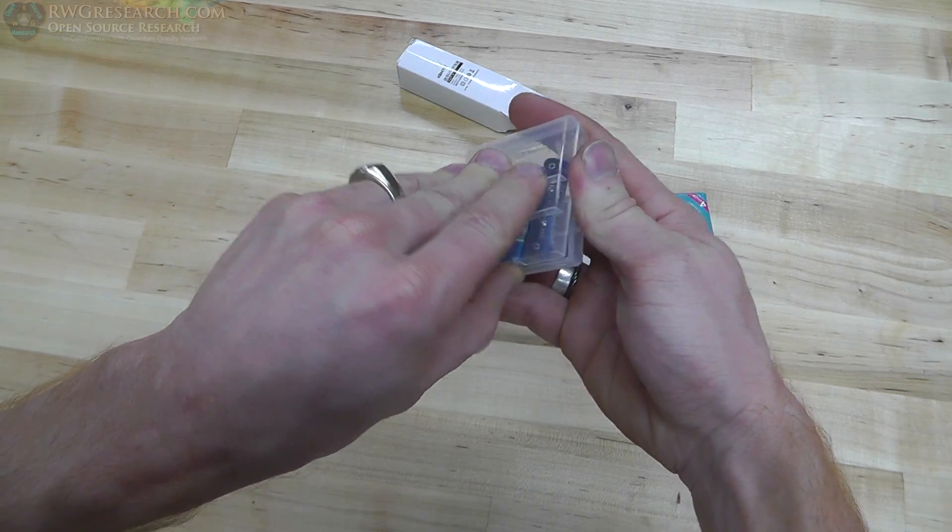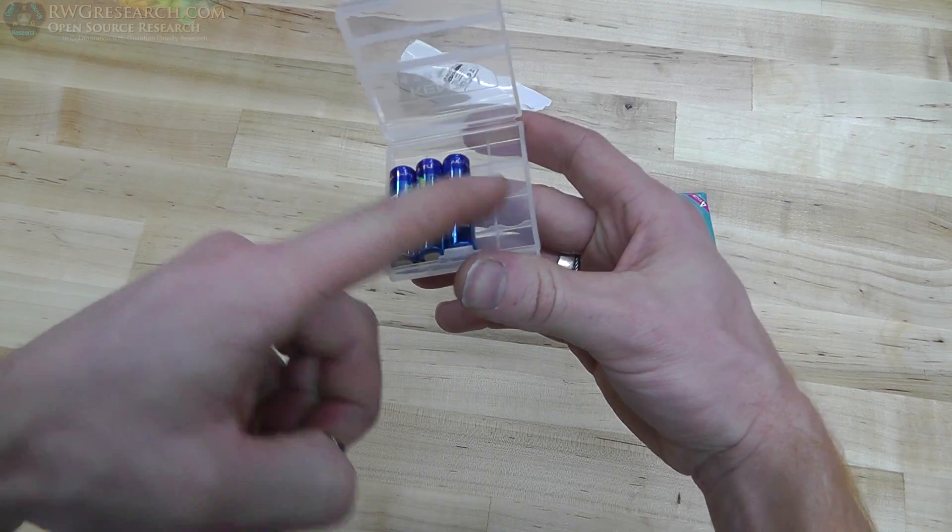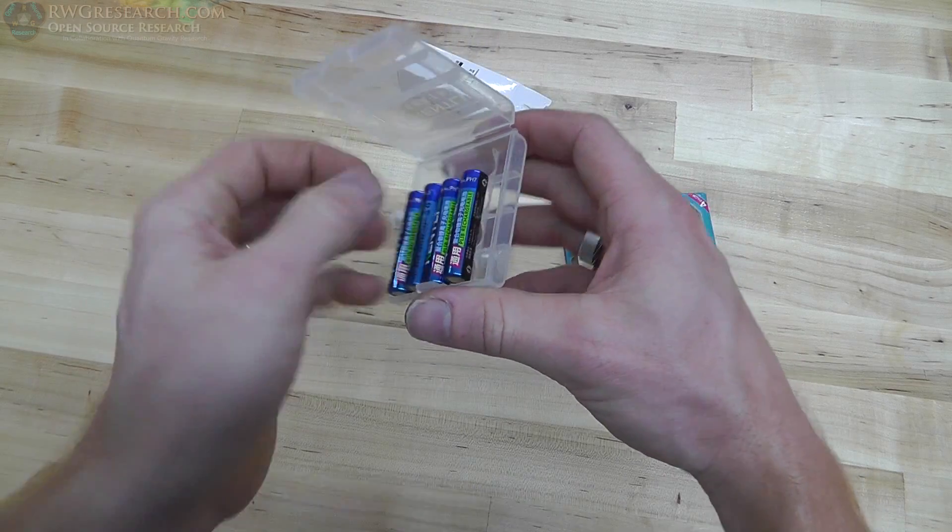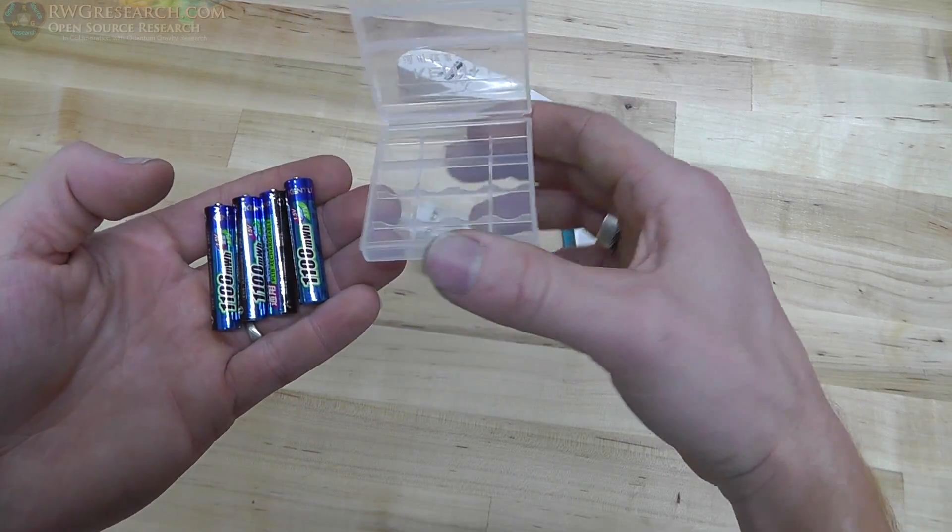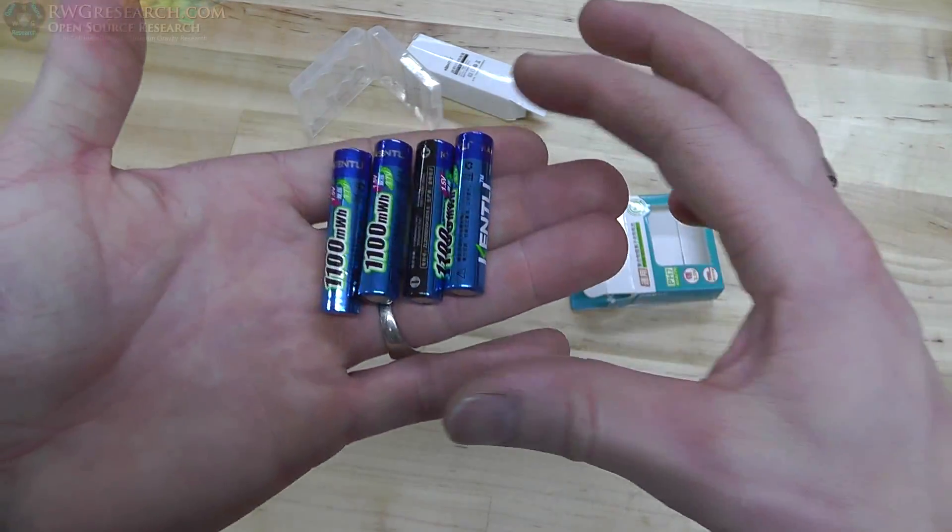So this case is pretty cool, actually, because these batteries are sitting in here this way, but there's actually notches for the other directions. And that has to do with AA or AAA, depending on what you're putting in there. It's pretty cool.